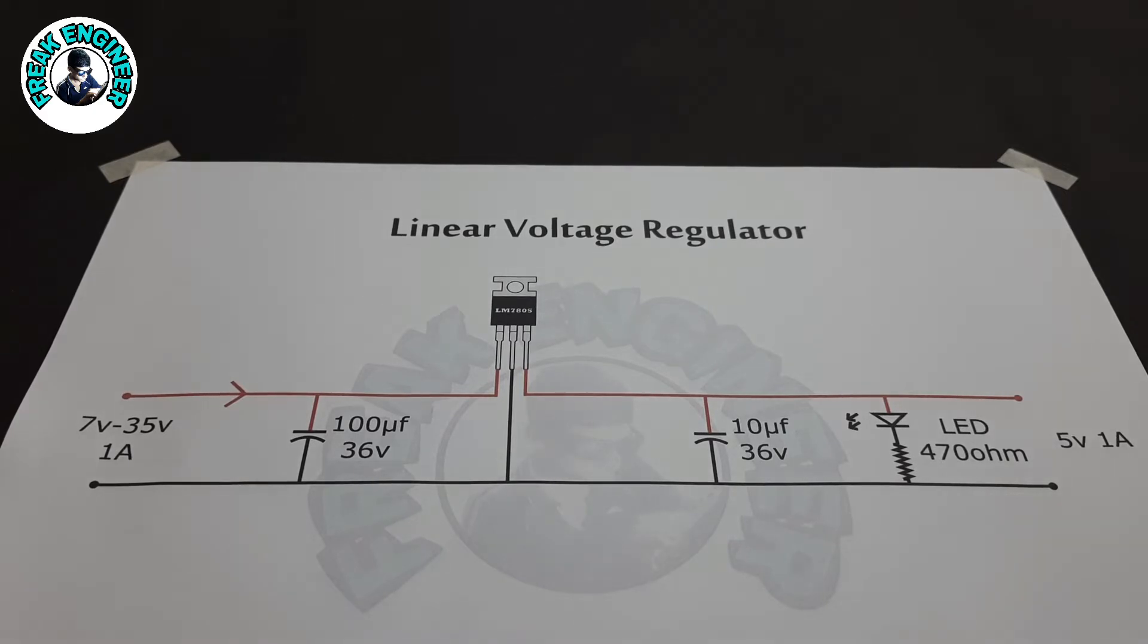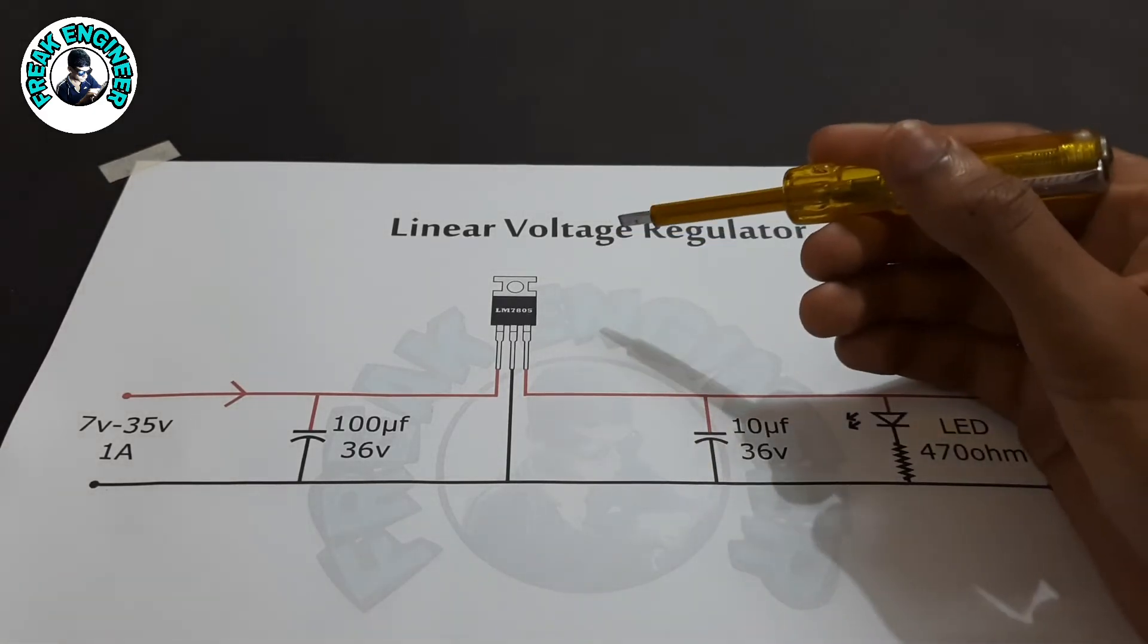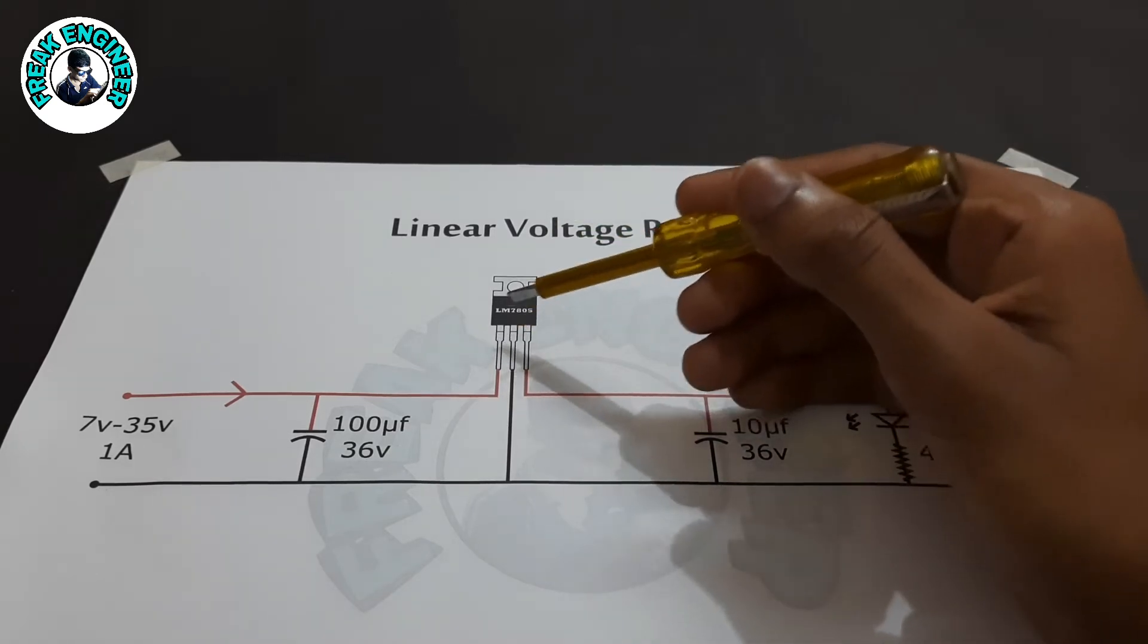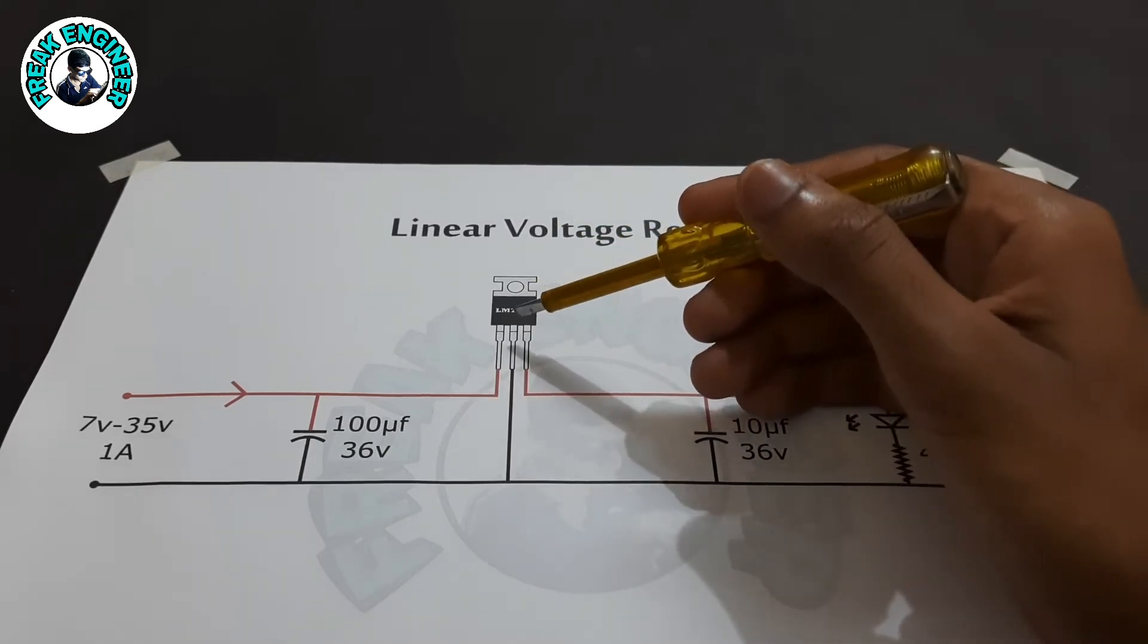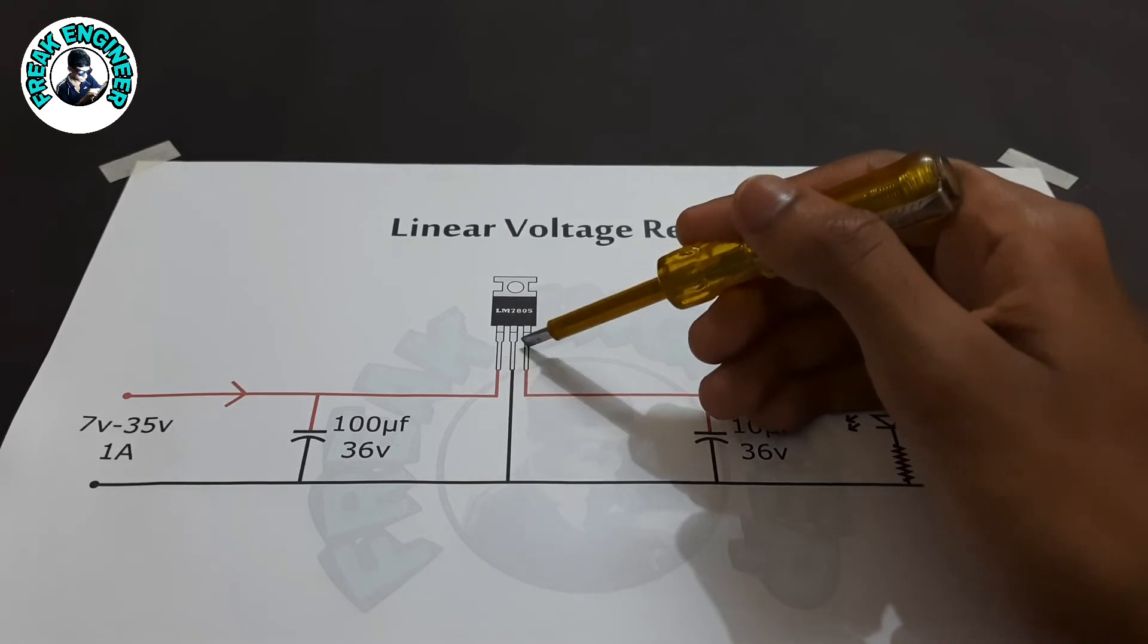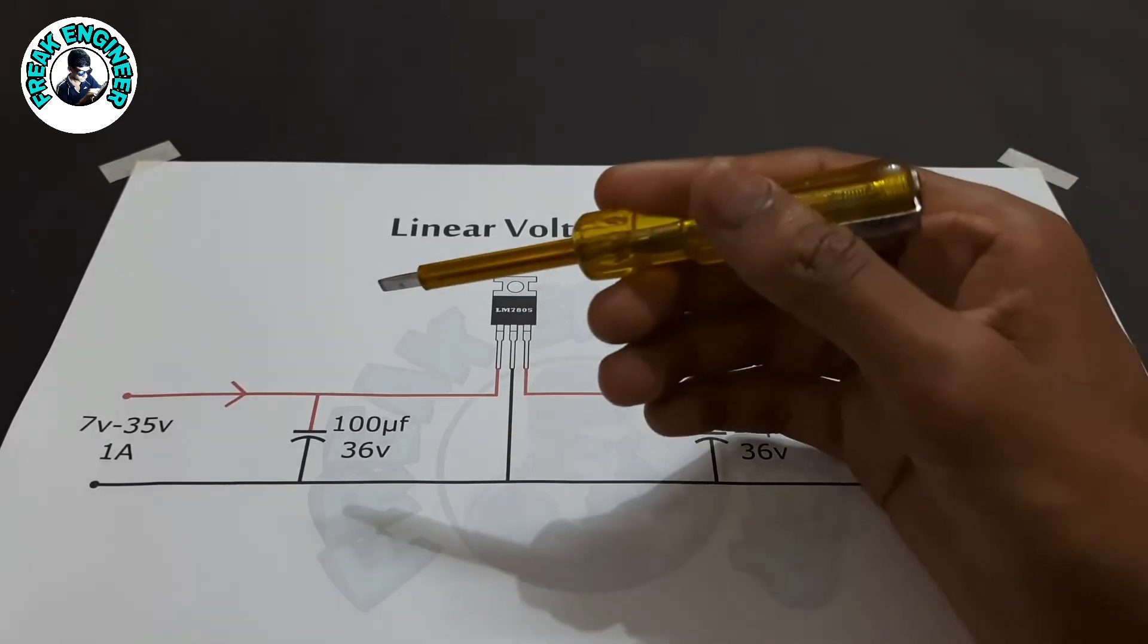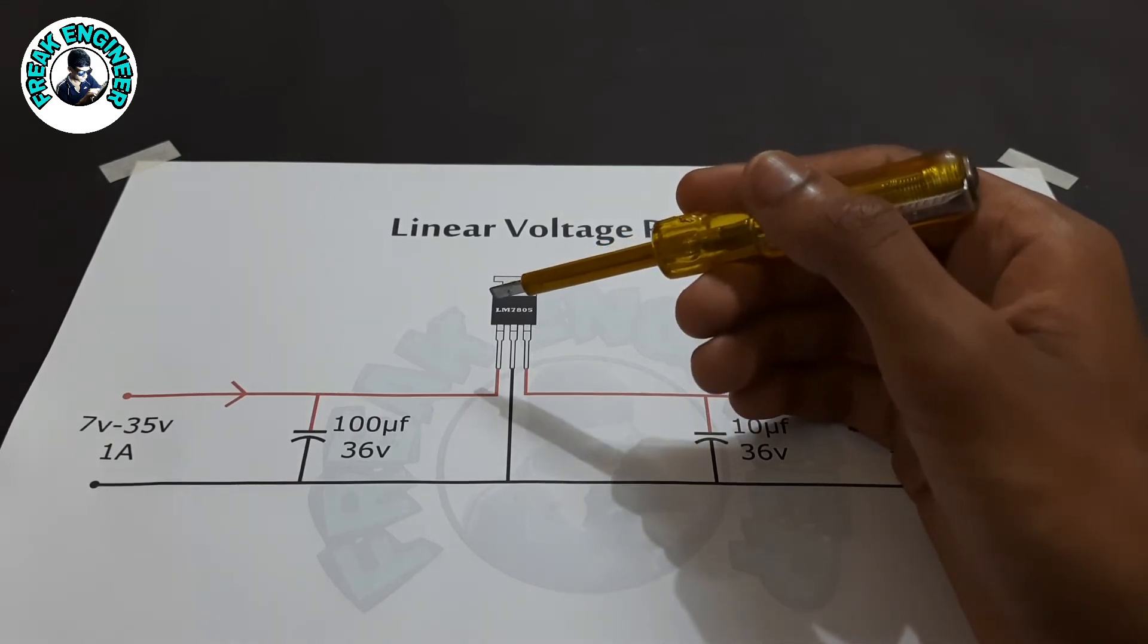Now here I have a circuit for these type of ICs with 7805 IC as an example. The input is supplied to pin number one and two, and the output is obtained from pin number two and three. This IC can handle an input voltage of 7 volts to 35 volts at 1 ampere.